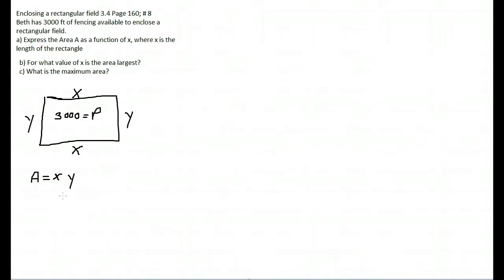That means area equals X times Y. Well, we need to get Y in terms of X, so we could write this as a function of X. So, I am going to take my formula for perimeter. Perimeter is the sum of all the sides. In other words, perimeter is 2 times the length, plus 2 times the width.